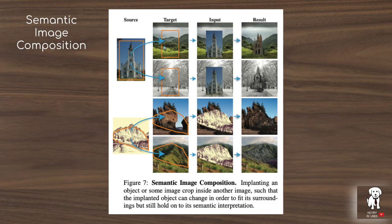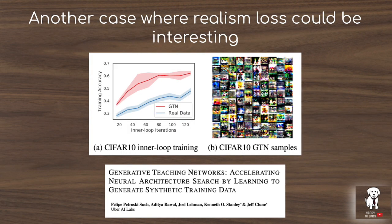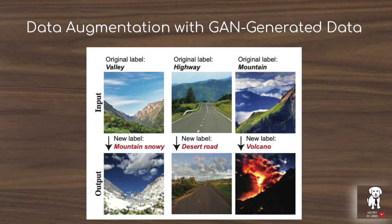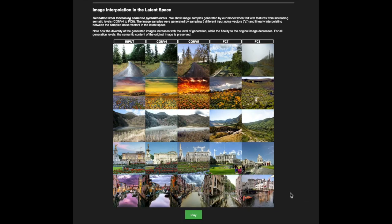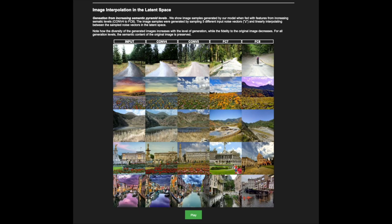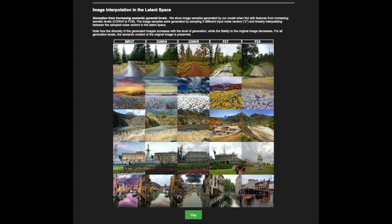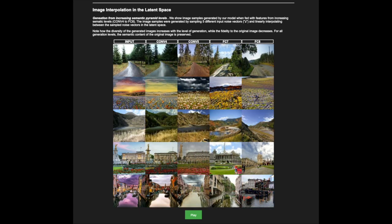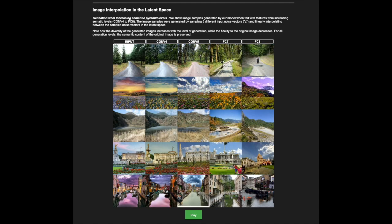In addition to visualizing the classification network's features with the added realism loss from the generative adversarial network framework, this architecture can be used for semantic image editing — like copying a tree and pasting it into a snow mountain landscape and then having the model smoothly blend it in. It can also be used for image relabeling by changing the embedded logits from the pre-trained classifier, to flip an image from a cat to a dog while semantically preserving as much of the original image as possible.